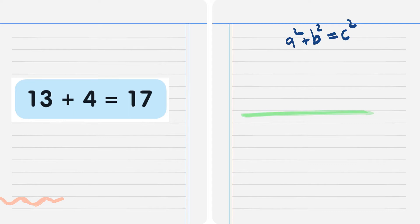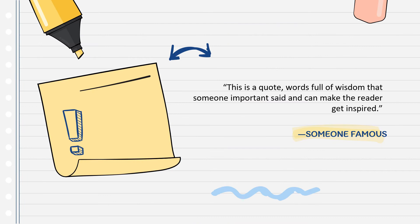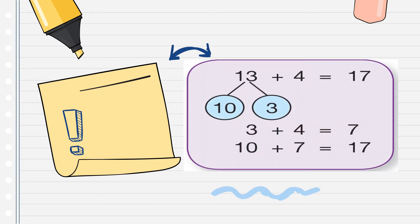So 13 plus 4 is equal to 17. It is the same as 10 plus 7, which is also equal to 17. Peter has 17 marbles altogether. We separate 10 and 3, and 3 plus 4 is equal to 7.